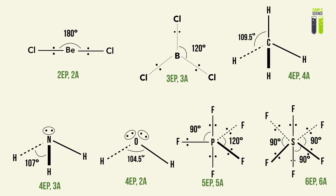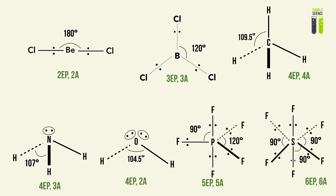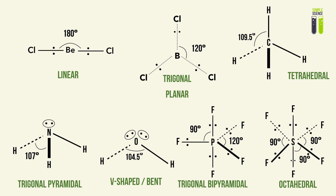Let's quickly summarize. Here are all the cases you will face in A-level: two electron pairs and two atoms gives a linear shape; three electron pairs and three atoms gives a trigonal planar shape; four electron pairs and four atoms gives a tetrahedral shape; four electron pairs and three atoms gives a trigonal pyramidal shape; four electron pairs and two atoms gives a V-shape; five electron pairs and five atoms gives a trigonal bipyramidal shape; and six electron pairs and six atoms gives an octahedral shape. Take a screenshot of this slide and keep it in your notes — this is the most important slide to take away from this video. Good luck!